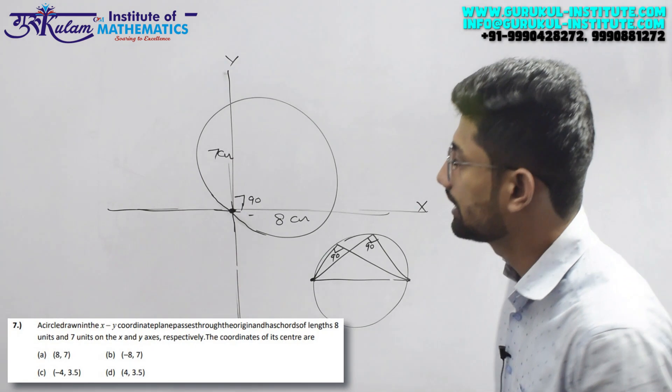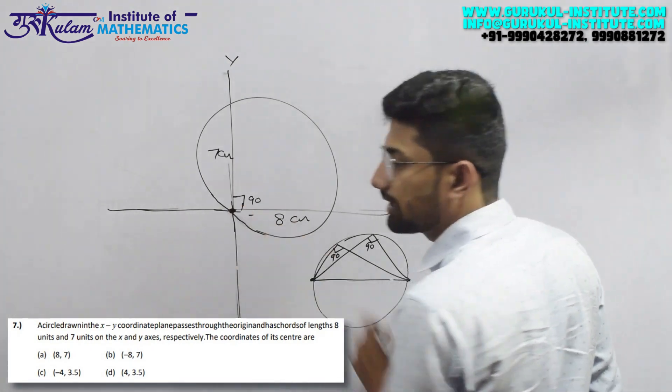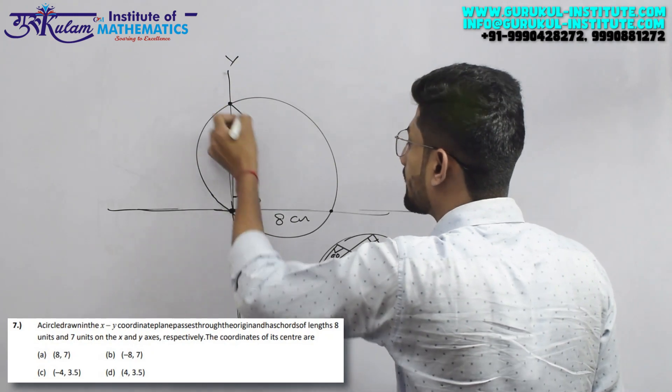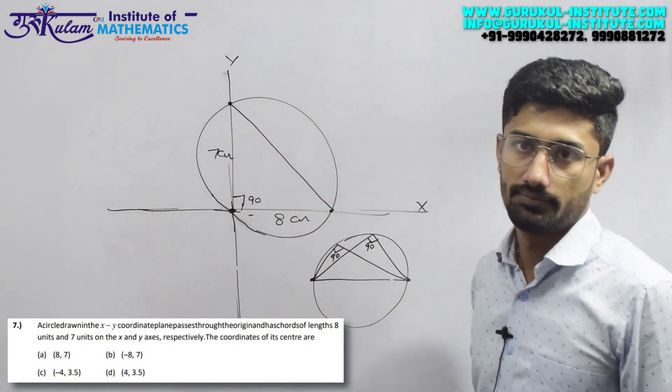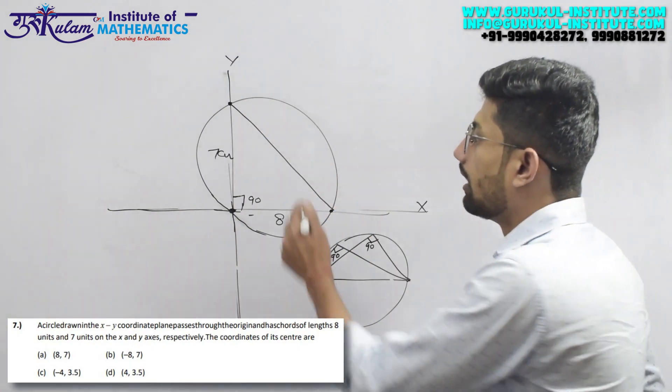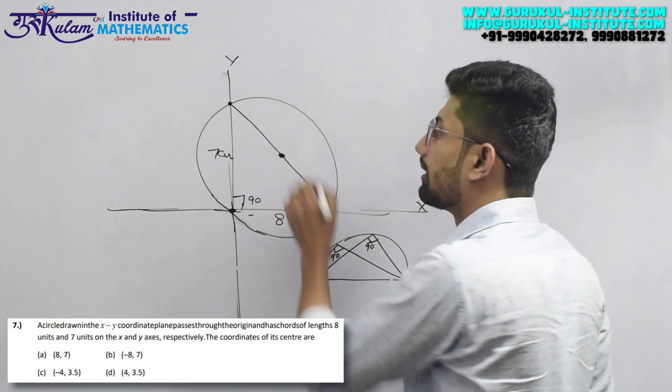And if an angle is forming from the diagonal on the circumference, then it will be 90 degrees - this is an if and only if condition. So here this 90 degree angle implies that if I join this point and this point, this is my diagonal.